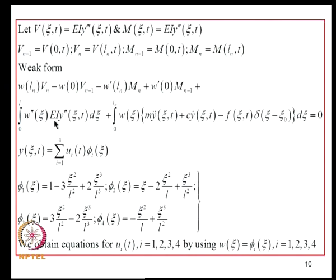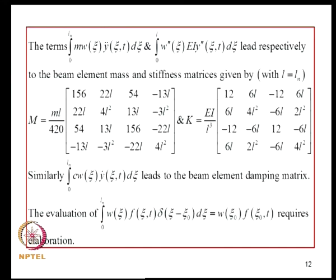We can examine each term one by one to see what contribution they make. The first term M_w·Y'' with respect to T and the second term W''·EI·Y'' lead respectively to the beam mass and stiffness matrices. Similarly, the third term involving damping leads to the beam element damping matrix — as seen in the last class.